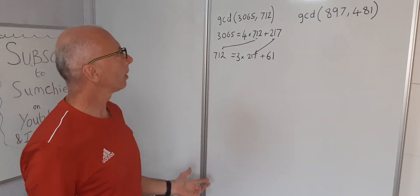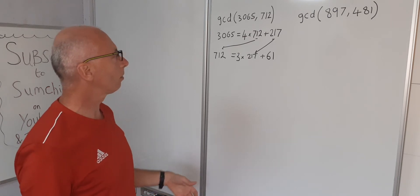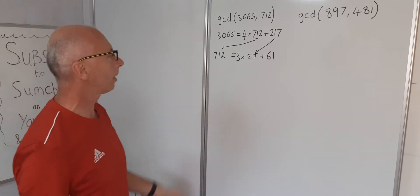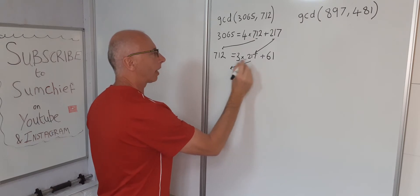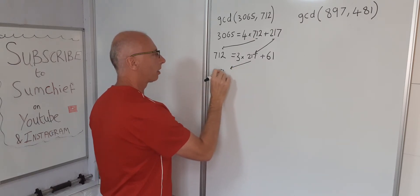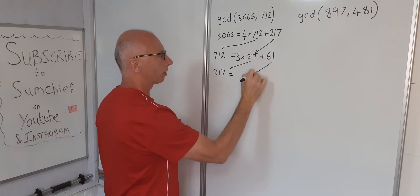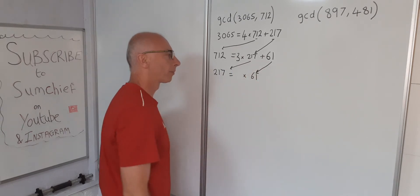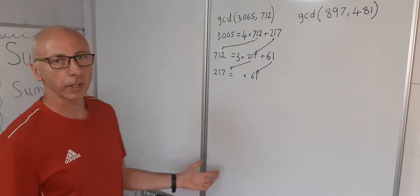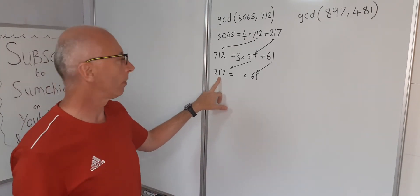We still haven't found the greatest common divisor just yet. We need to continue all the way down until we get to the end. So now 217 comes here and equals something times this 61. 61 multiplied by what is just under 217?